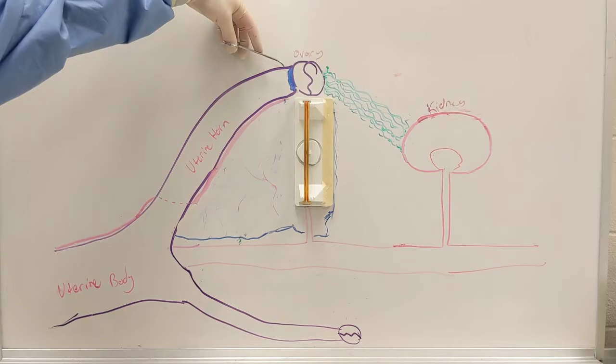And so that vascular pedicle would be up and down if your assistant was holding it up for you to ligate. And so this is what that would look like, and what angle you'd be working at during surgery.